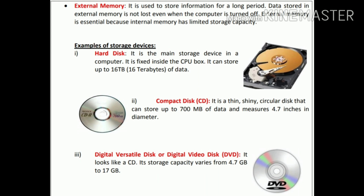The second most common external storage device is the compact disk. It is a thin, shiny, circular disk that can store up to 700 MB of data. We store lots of songs, movies, and photographs of programs and events in the compact disk. The compact disk stores only 700 MB of data, unlike the hard disk which stores 16 terabytes. The diameter of the compact disk is 4.7 inches.